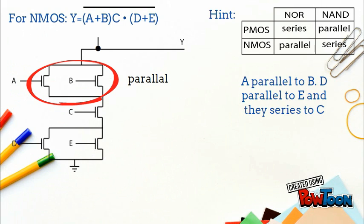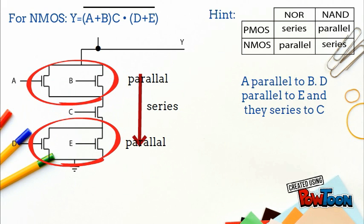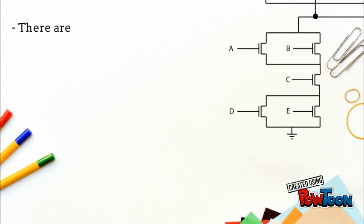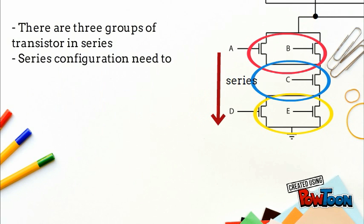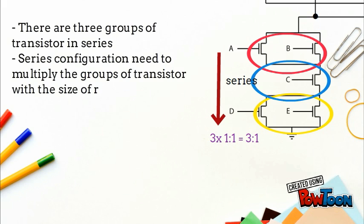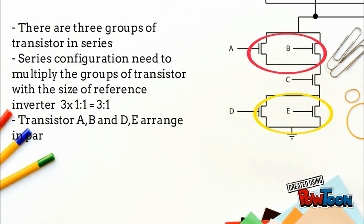For NMOS: A is parallel to B, D is parallel to E, and A is in series with C. There are three groups of transistors in series. The series configuration requires multiplying the number of groups by the size of the reference inverter: 3 times 1-to-1 equals 3-to-1.